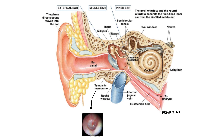The external auditory meatus is an S-shaped canal. The outer third of the canal is lined with cartilage and the inner two thirds by temporal bone. The tympanic membrane separates the middle ear from the external ear.